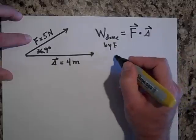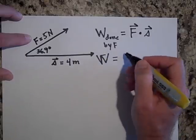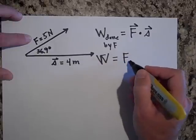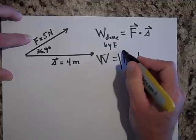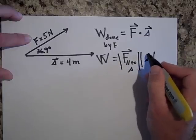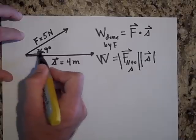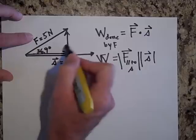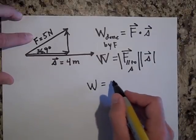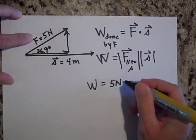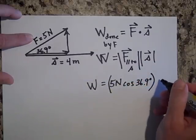To get the work done, I take the component of F that's in the same direction as s — parallel to s — just the magnitude of that component, and multiply it by the magnitude of s. This part of F perpendicular to s doesn't matter at all for work. So the work equals five newtons times cosine of 36.9 degrees — that gives the parallel component — times four meters.